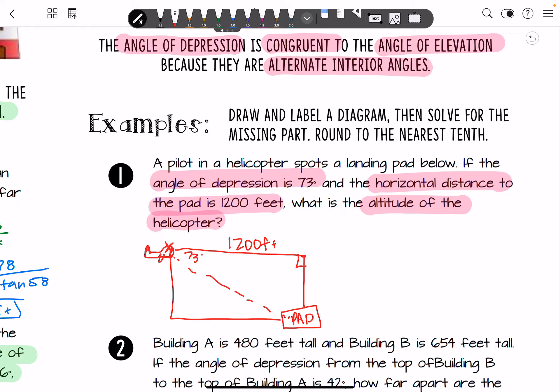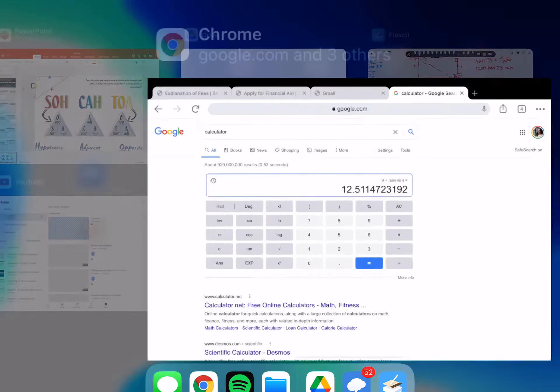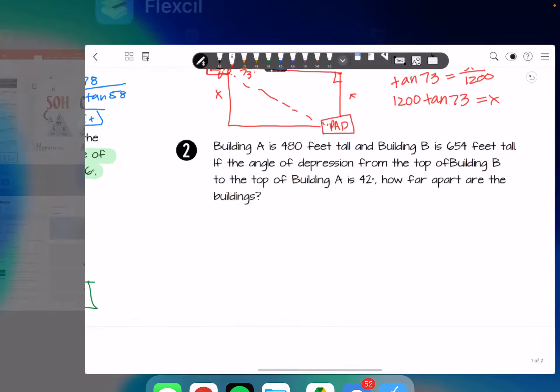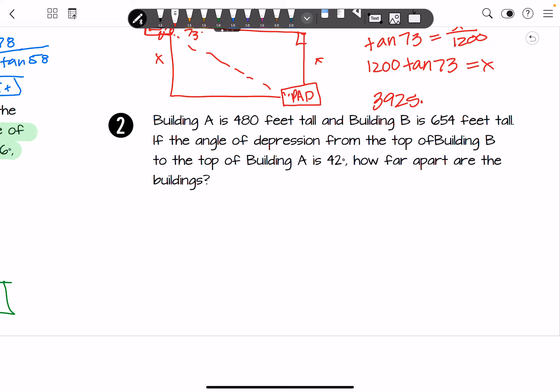Or you could also use the angle of elevation and it would still do the same exact thing. So I'm going to go ahead and use this triangle where it's 1,200, x, and you've got a 73 angle. And you'll notice that I'm having to use tangent. It's going to be tangent of 73 is equal to x over 1,200. This one works out and we can do 1,200 times the tangent of 73, and that's going to equal x. So move on to our calculator, make sure it's in degrees mode and type it in. And we get 3,925.0 feet is approximately how far that distance is.